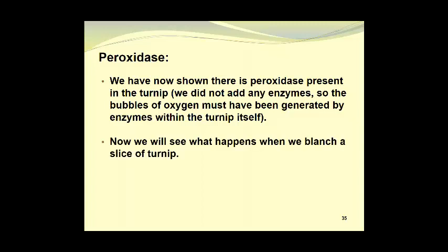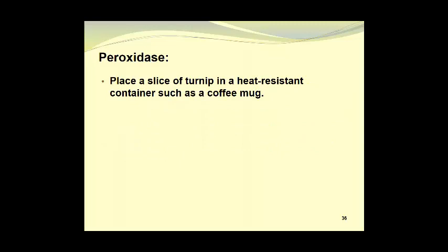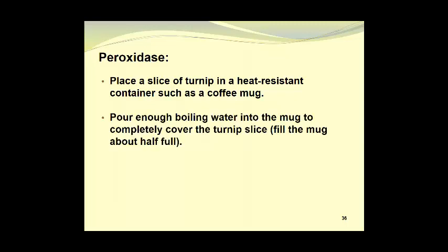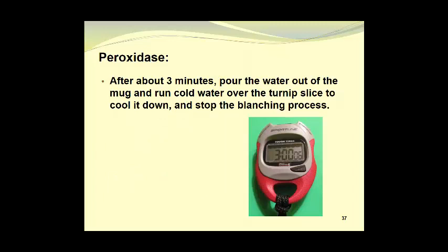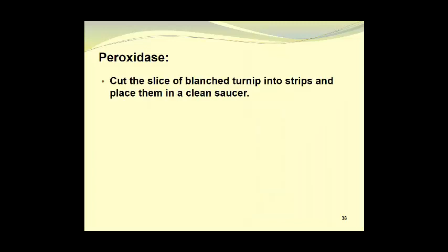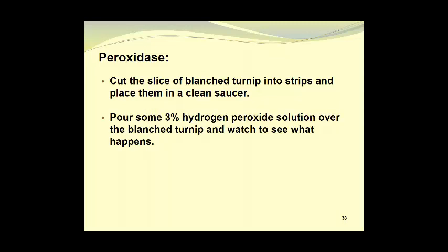Now we will see what happens when we blanch a slice of turnip. To do this, we will place a slice of turnip in a heat-resistant container such as a coffee mug. Then we can pour enough boiling water into the mug to completely cover the turnip slice and that means we need to fill the mug to about half full. The contents of the mug can be stirred with a fork and then the water in the mug can be replaced with fresh boiling water after about a minute and a half. After about three minutes, we can pour the water out of the mug and run cold water over the turnip slice to cool it down and stop the blanching process. The slice can then be cut into strips and placed on a clean saucer. We can pour some 3% hydrogen peroxide solution over the blanch turnip and watch to see what happens.